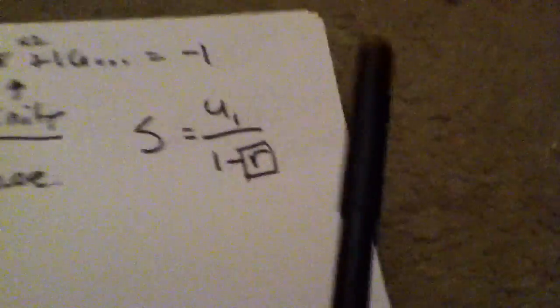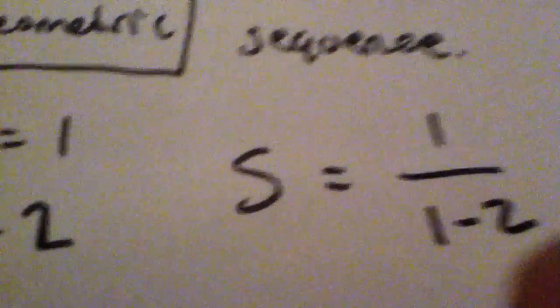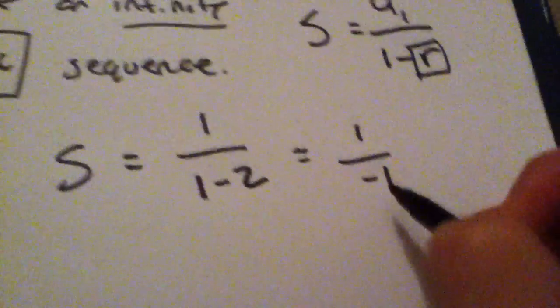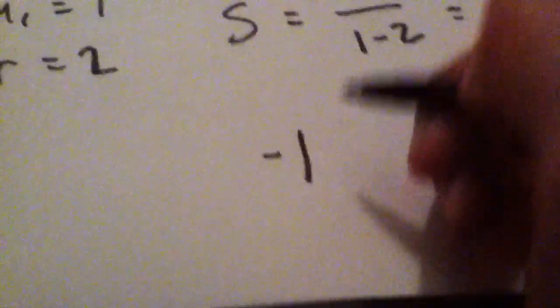Just plug these numbers into this equation, and you're going to have the sum of the infinite sequence equals 1, the first term, all over 1 minus 2. That simplifies to 1 over negative 1. What does that give you? Negative 1.